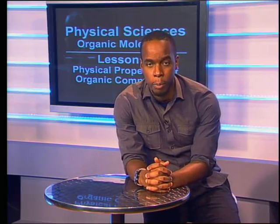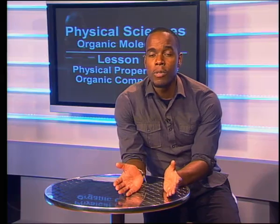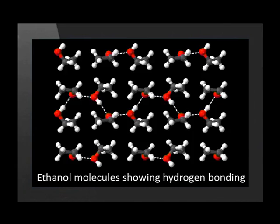Substances with hydrogen bonds between molecules therefore have high boiling or melting points and low vapor pressure. They are likely to be solids at room temperature but may also be liquids. An example of a substance with hydrogen bonding is ethanol. In the diagram, the dotted lines represent the hydrogen bonds between oxygen — the red balls — and hydrogen — the white balls.